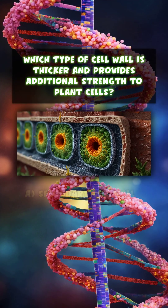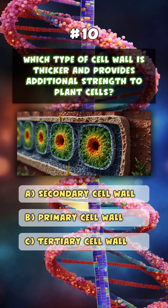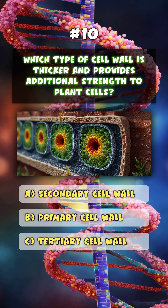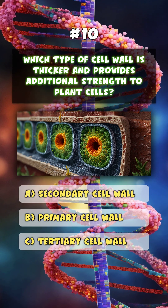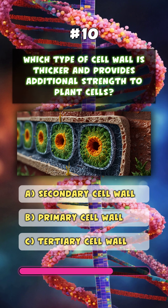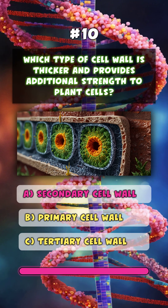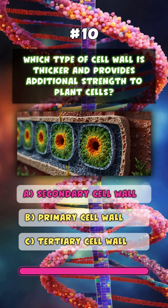Which type of cell wall is thicker and provides additional strength to plant cells? A. Secondary cell wall.